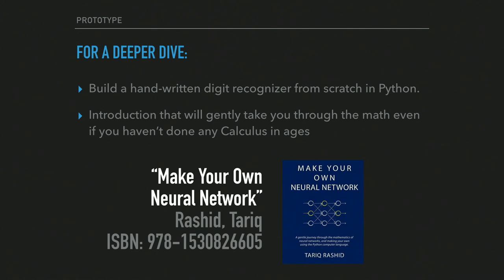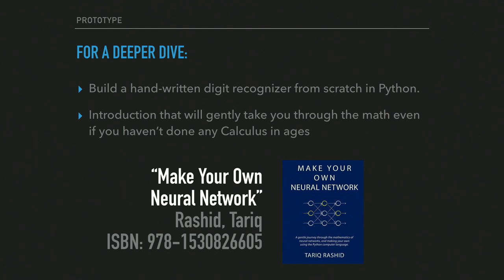If you want to understand the internals, there's a great book called 'Make Your Own Neural Network' that walks through building one from scratch in Python to detect handwritten digits using the MNIST dataset. It's written very clearly — even with a lot of math and calculus required, the resulting code is quite simple, and the author explains it in a way accessible even without a strong math background.